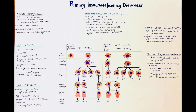Next we will talk about IgG deficiencies — this is when a patient is deficient in IgG antibodies. It's important to note that there are five major types of antibodies: IgM, IgA, IgG, IgD, and IgE — a useful mnemonic is MAGDE. The IgG antibodies are the most common type.